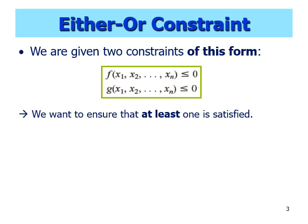So let's see what is meant by an either-or problem. Suppose we are given two constraints of this form. We want to ensure that at least one of those constraints is satisfied. I need to emphasize that both constraints must be in that form: first, both must be inequalities; second, the sign must be less than or equal to; and third, the right-hand side must be zero.